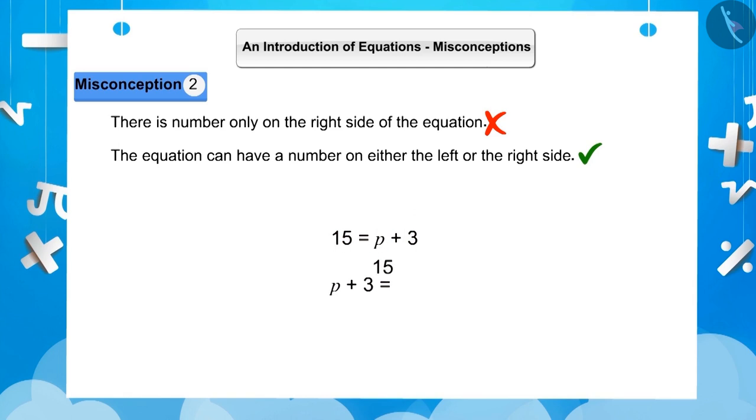The value of LHS and RHS will remain equal. Hence, equations 15 is equal to p plus 3 and p plus 3 is equal to 15 both have the same meaning.